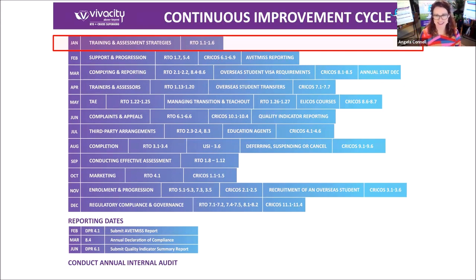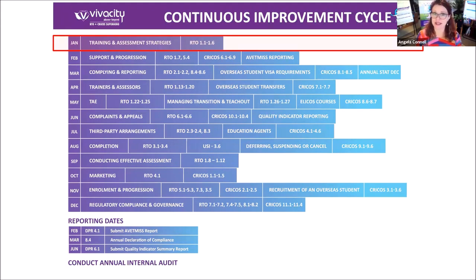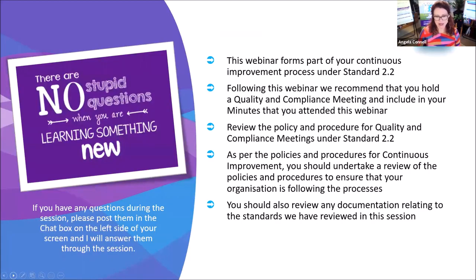Wait until after this webinar to do that so we can get through the content. The strategic planning retreat is all about the other side of your business — the most important part. We do have compliance, which is very important, but if we're not sustainable, we're not going to survive in the training industry. This webinar forms part of your continuous improvement process under standard 2.2.